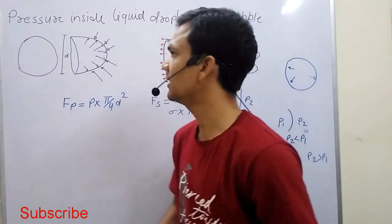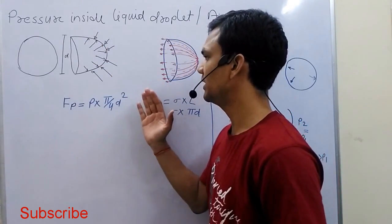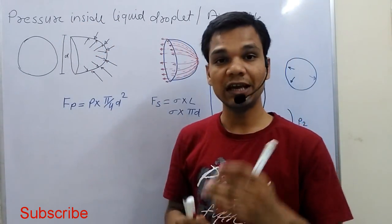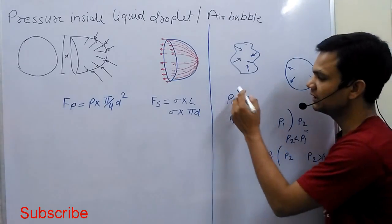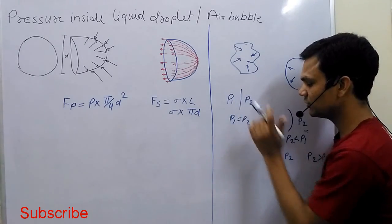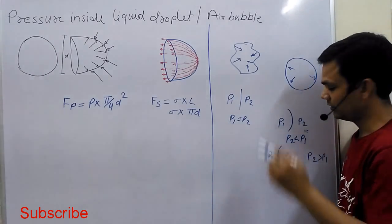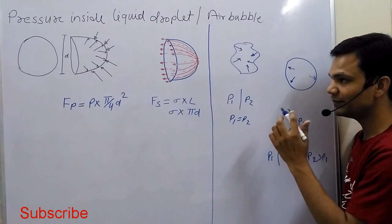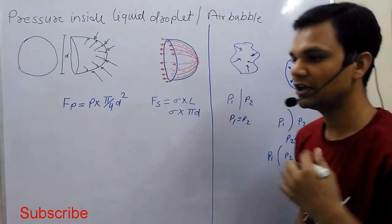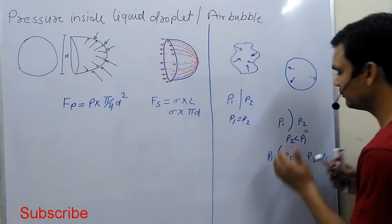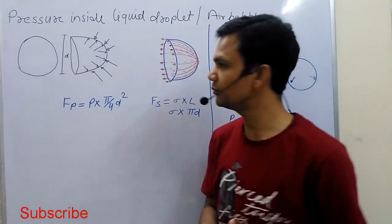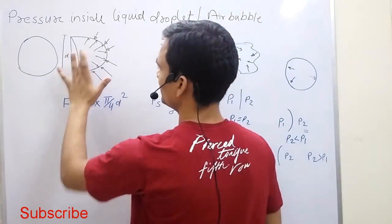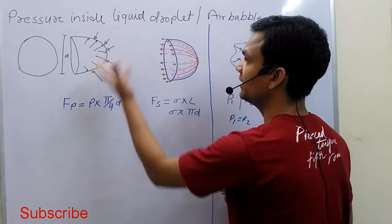Now we consider pressure inside a liquid droplet and air bubbles. To understand this, we calculate the pressure inside the liquid droplet above the atmospheric pressure, because atmospheric pressure is equal on both sides. So pressure P1 is more, but we calculate only above the atmospheric pressure. If we calculate with atmospheric pressure then it will be absolute pressure, which I described in my last lecture.